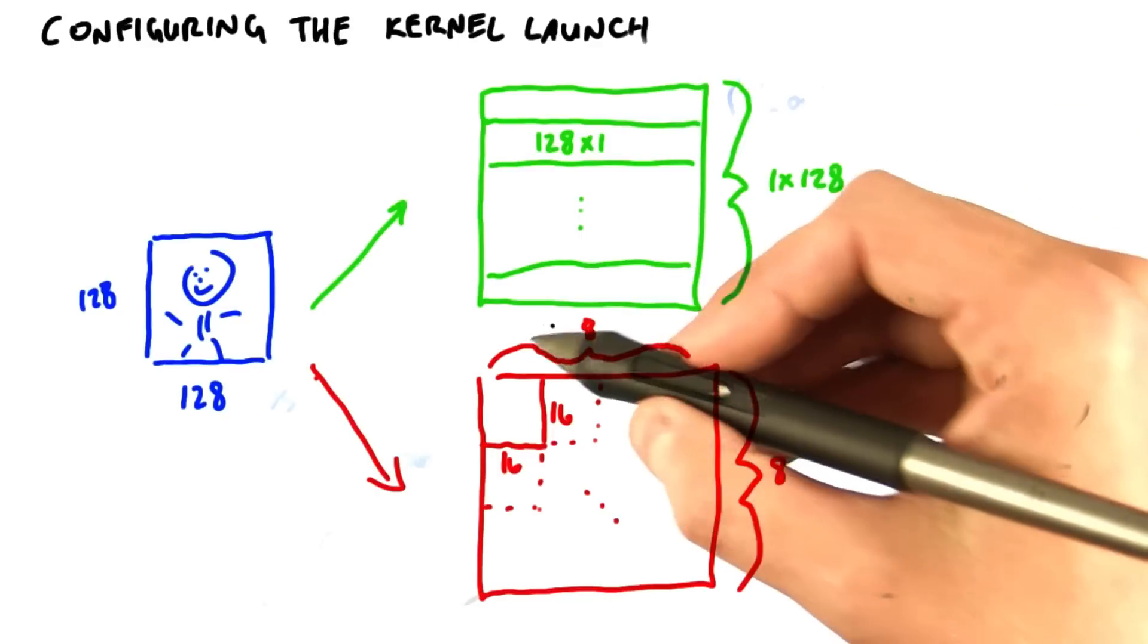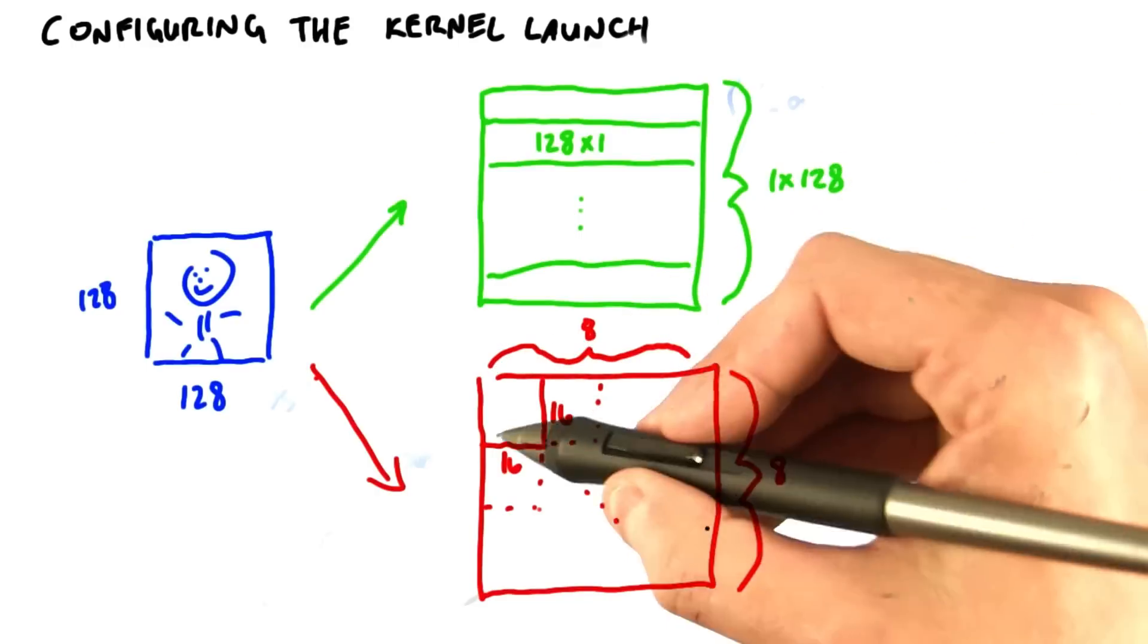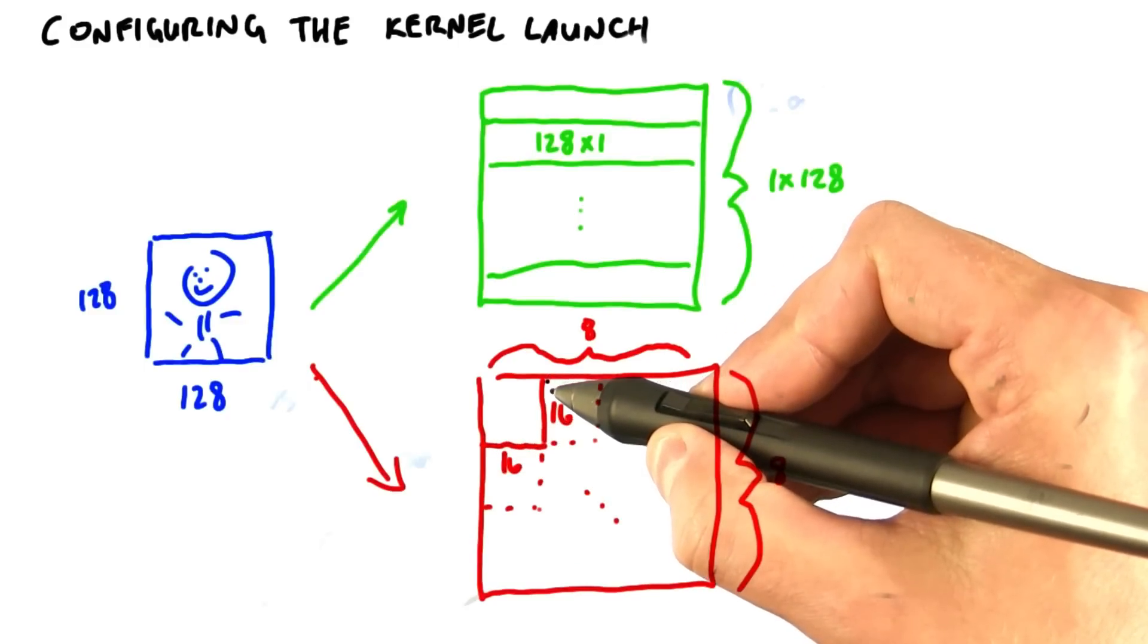Or, we might instead choose to launch an 8 by 8 grid of blocks, where each block is 16 threads by 16 threads.